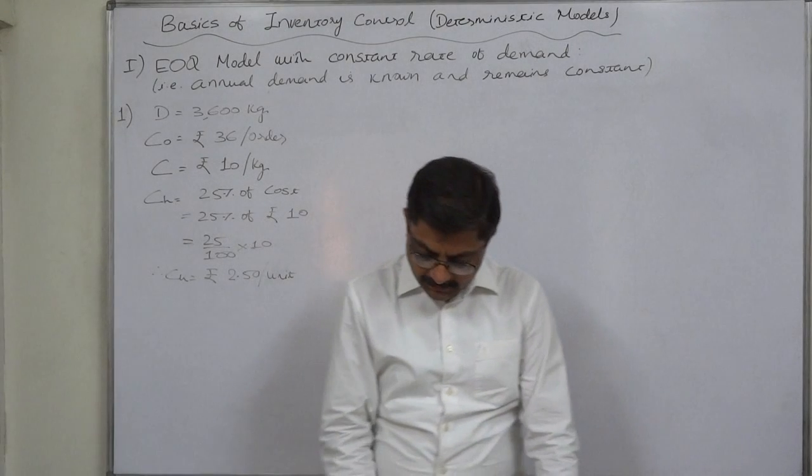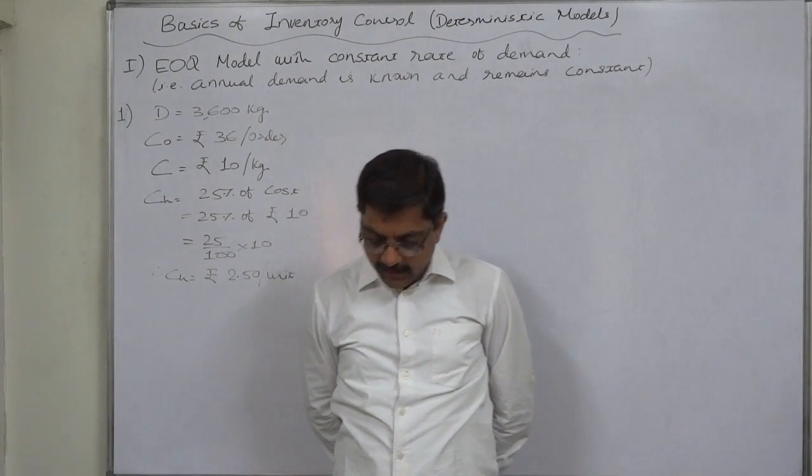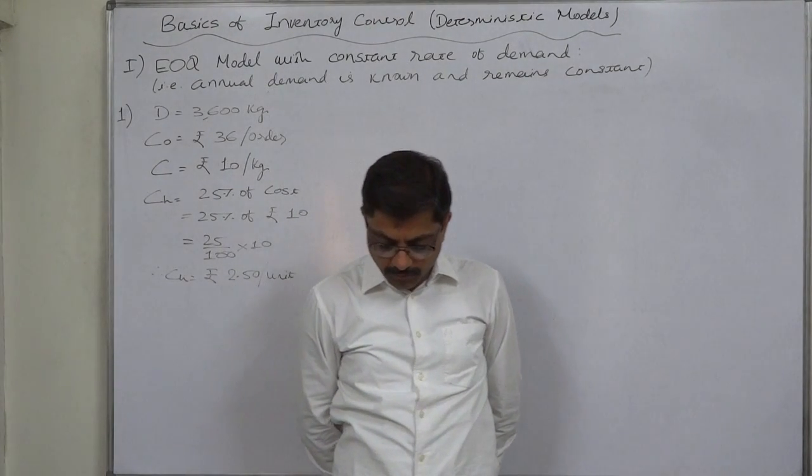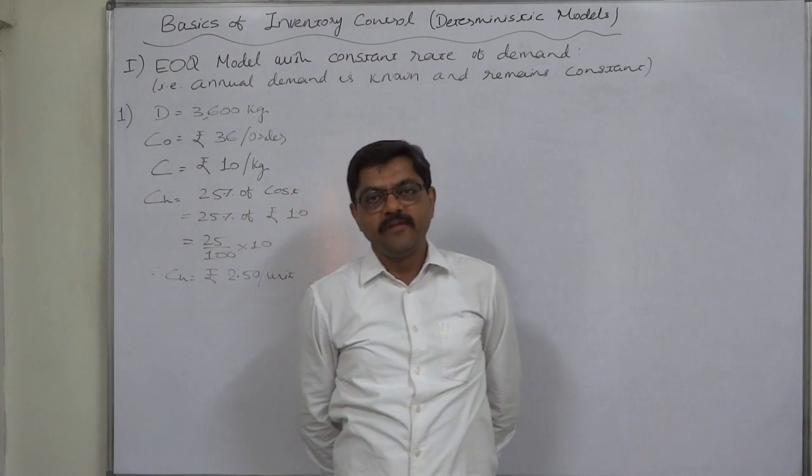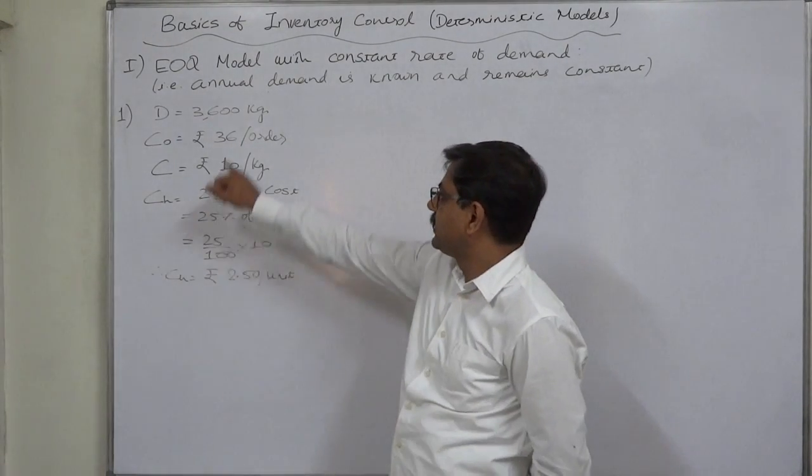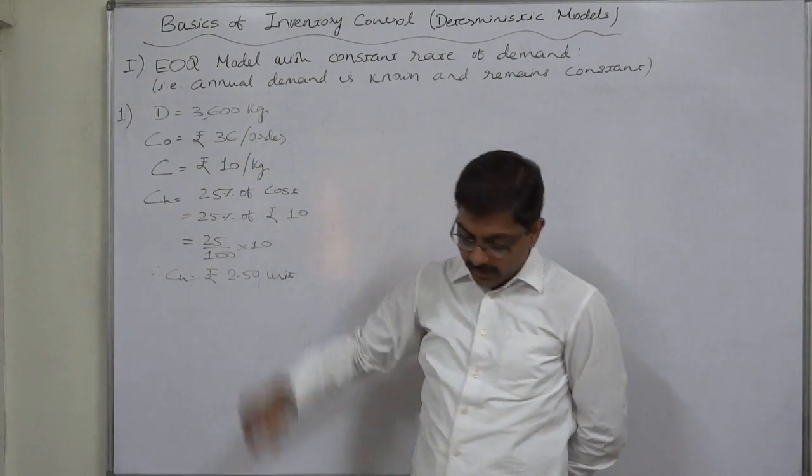The problem is, the production department of a company requires 3600 kilograms of raw material for manufacturing a particular item per year. That means annual demand is 3600 kilograms. That is D for us.